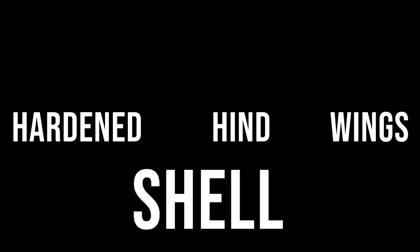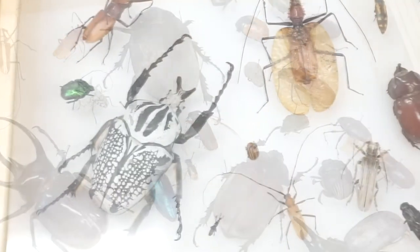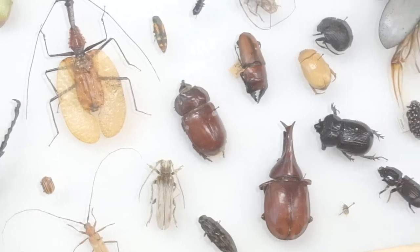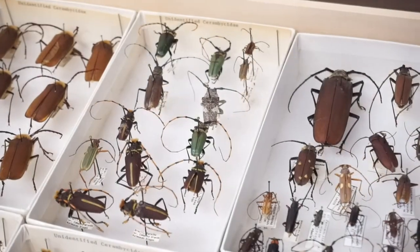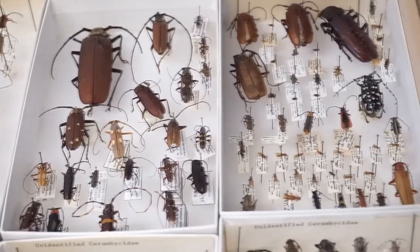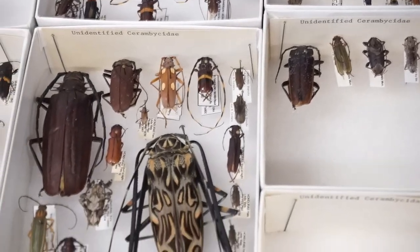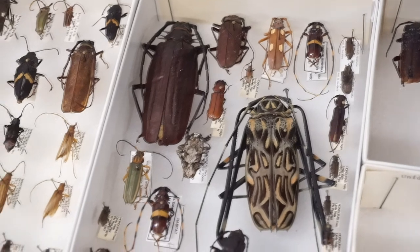The first order is Coleoptera, or the beetles. In Greek and Latin, Coleoptera means 'sheath wing,' referring to the hardened hind wings of the beetle that act as a shell. Beetles are extremely diverse and successful in the animal kingdom mostly because of these hardened back wings — they provide both mobility because they are relatively light, and protection from predators. Beetles are essentially tiny little tanks roaming around in the environment.